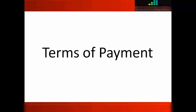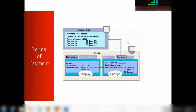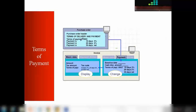The next topic is terms of payment. Terms of payment is an agreement with the vendor regarding discounts for early payment. For example: if we pay within 10 days, we get a 3 percent discount; if we pay within 20 days, we get a 2 percent discount; and if we pay in 30 days, there is no discount and we pay the net amount. This type of setup can be maintained in the master data and in customizing, based on whatever is agreed with the vendor.